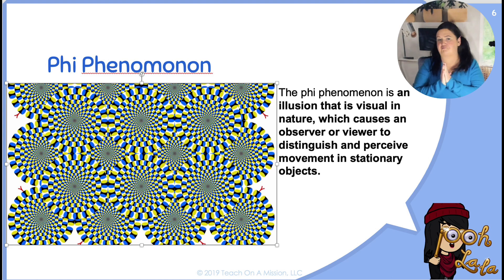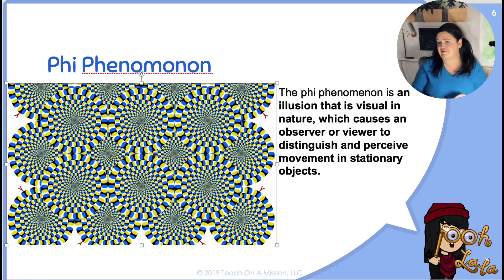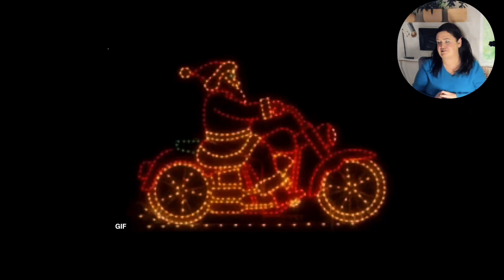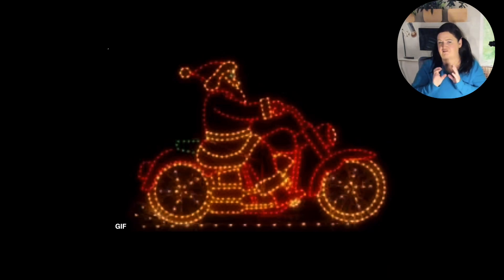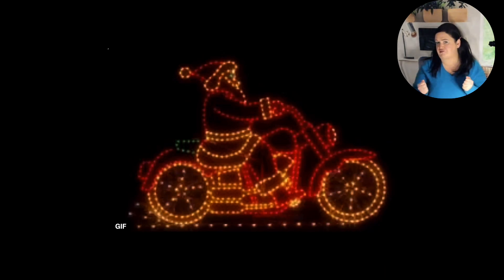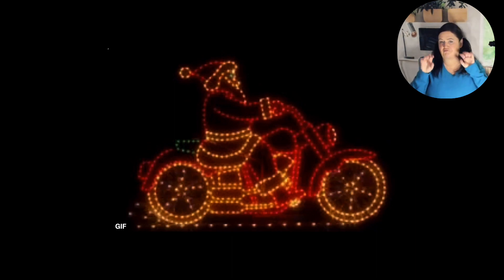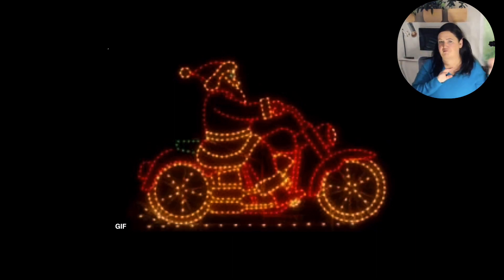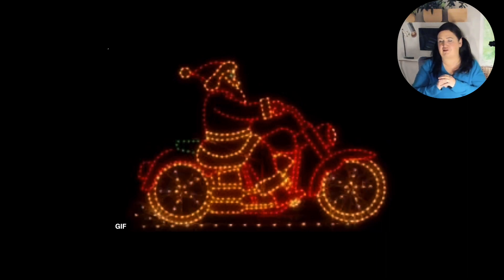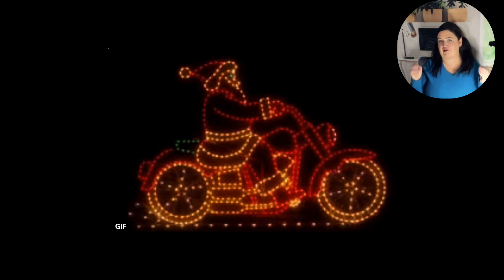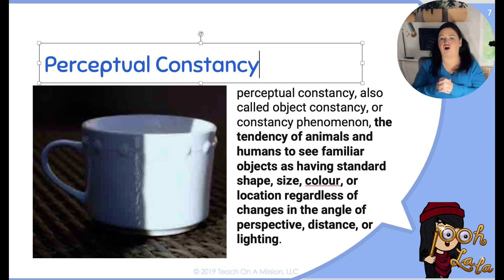The next one is perception of movement known as the Phi Phenomenon. This is where lights are used to illustrate motion. We see this a lot in neon signs. This was really popular in the 1950s, 60s, 70s, but we also see it in Christmas lights, especially those that are displayed with music. It almost looks like the strobing of the lights are going to the rhythm of the music.